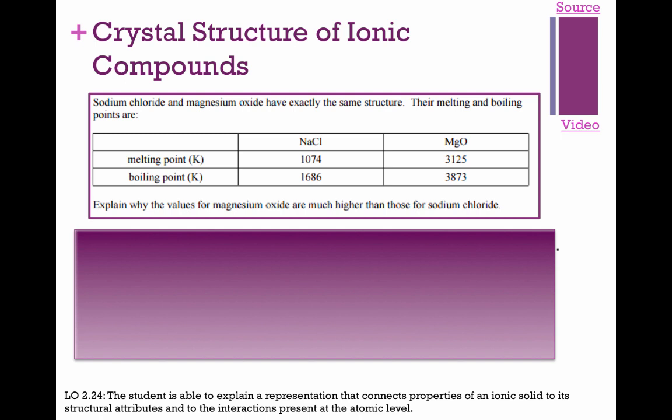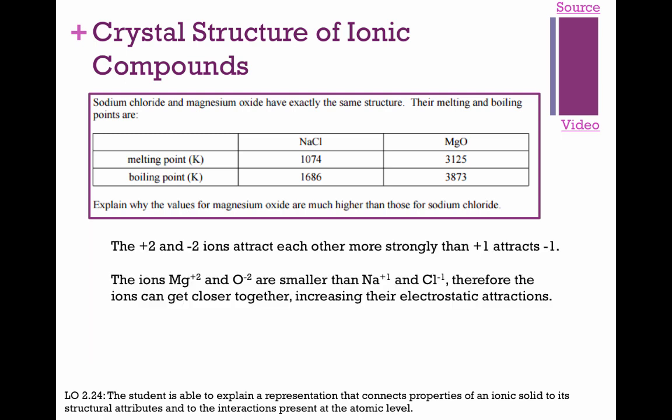Sodium chloride and magnesium oxide both have a crystal lattice structure, but MgO has a much higher melting and boiling point. To explain: referring to Coulomb's law, MgO has smaller ions and higher charges (2+/2−) compared to NaCl (1+/1−). Both factors mean the ions in MgO are more strongly attracted to each other, requiring more energy to break apart.